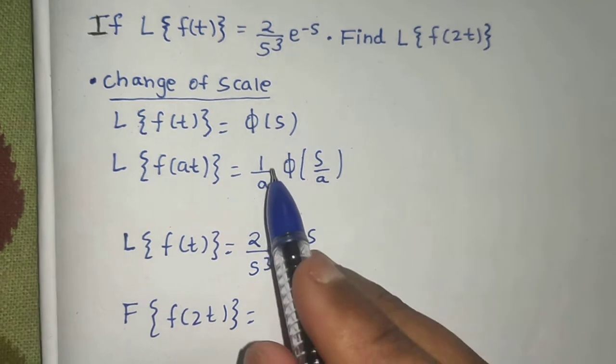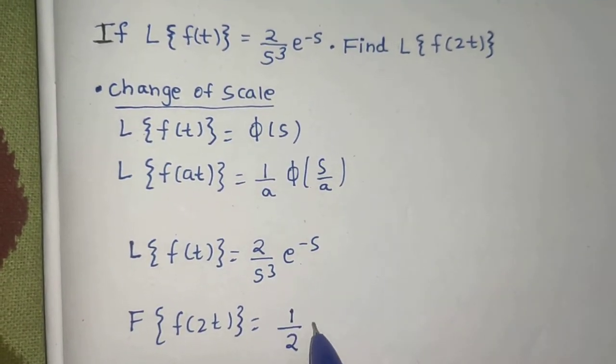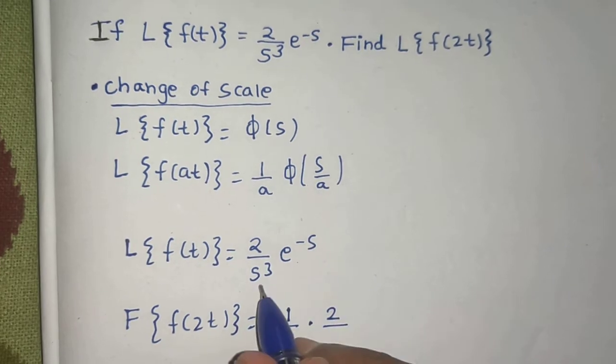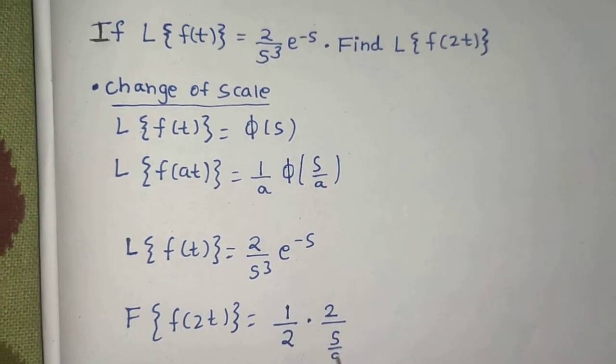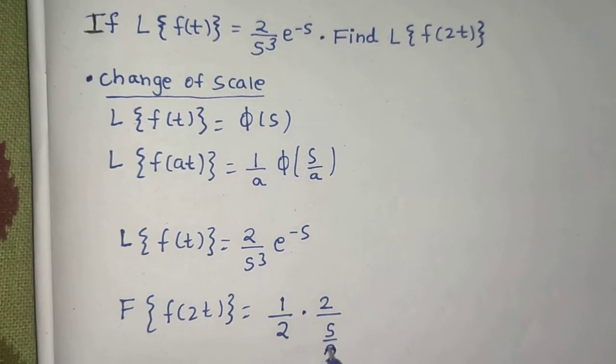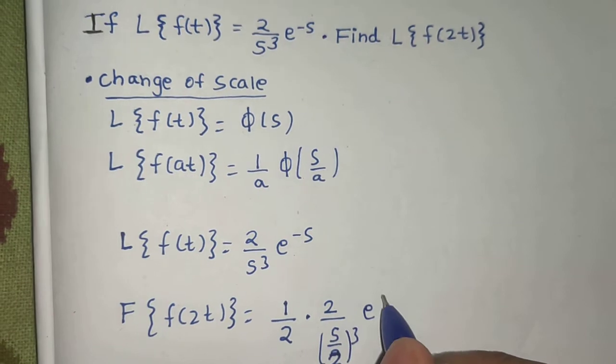First of all, 1 upon a, so 1 upon 2 will be there, into 2 upon s cube. Now s will be replaced by s by a, s by 2. a is 2 here, so s by 2 whole cube e power. In place of s I will have s by 2.